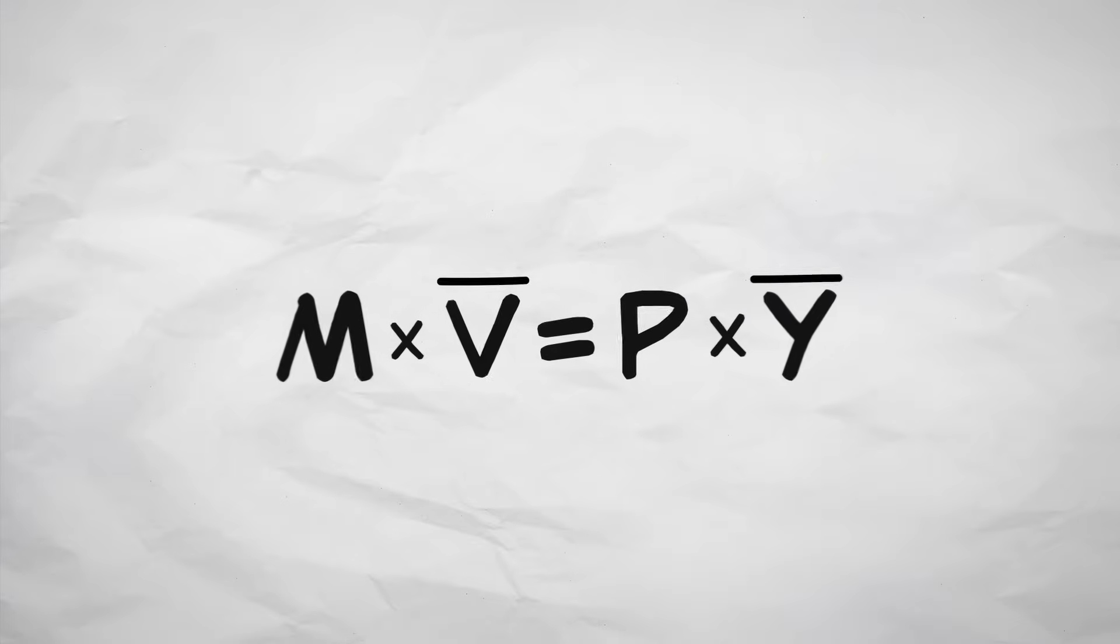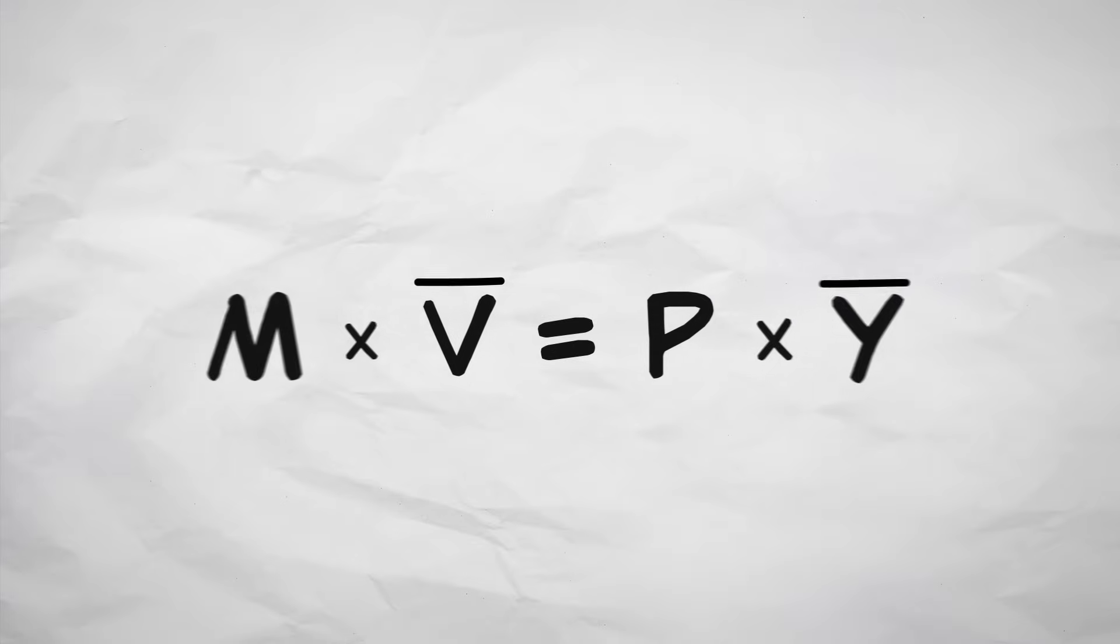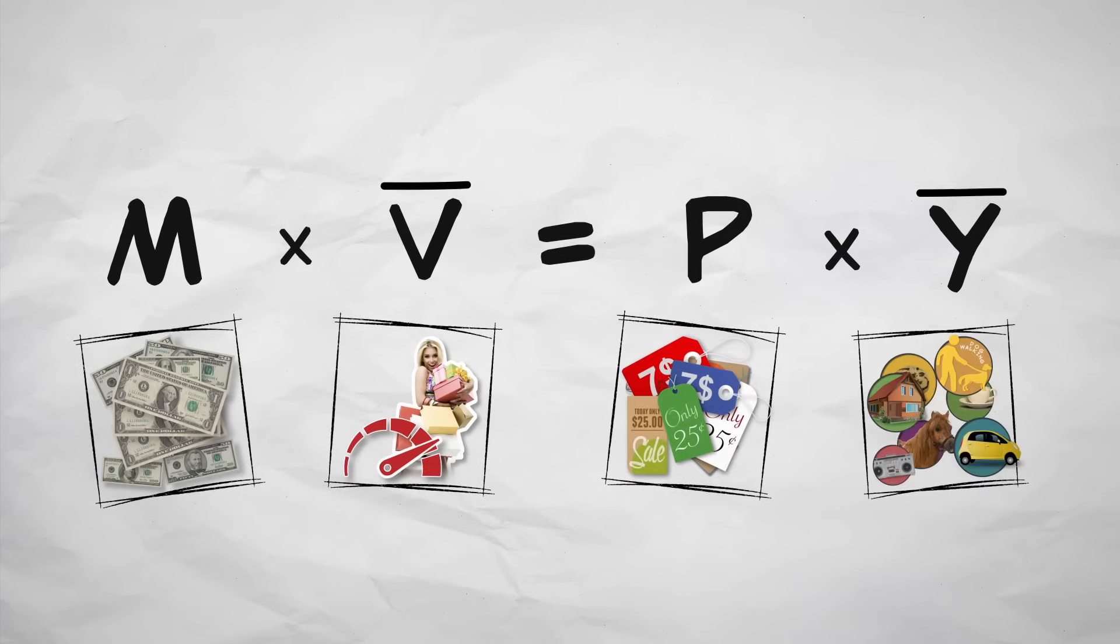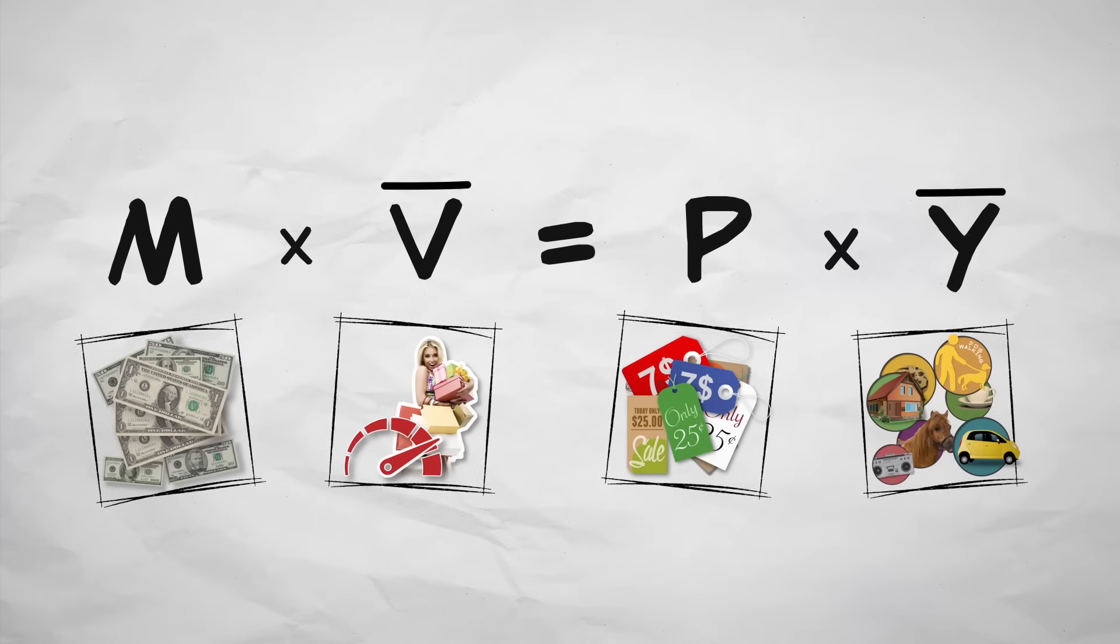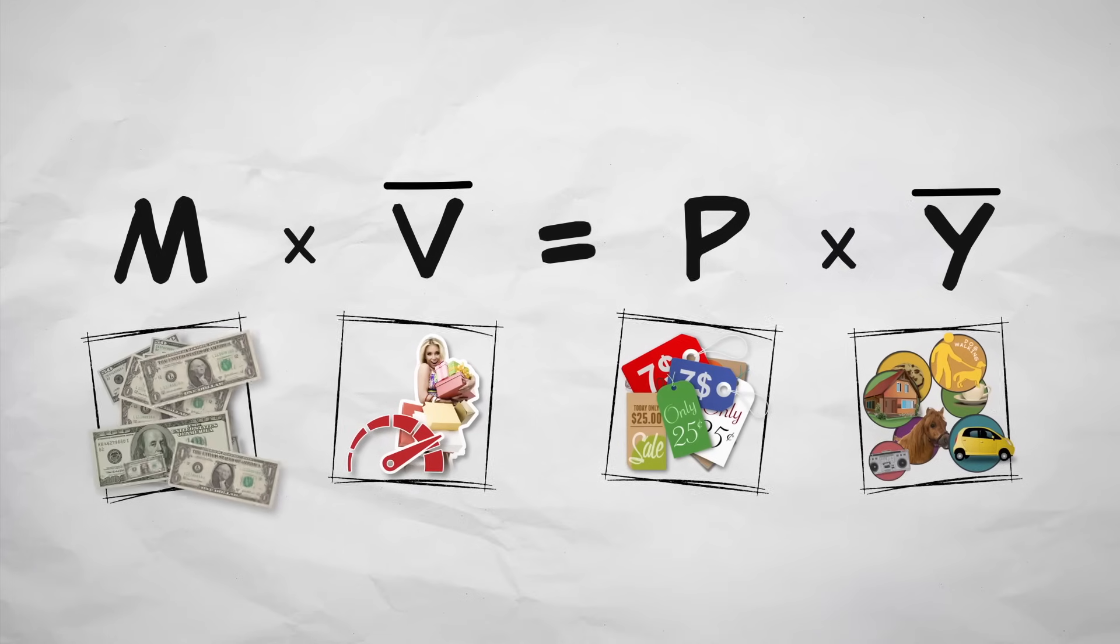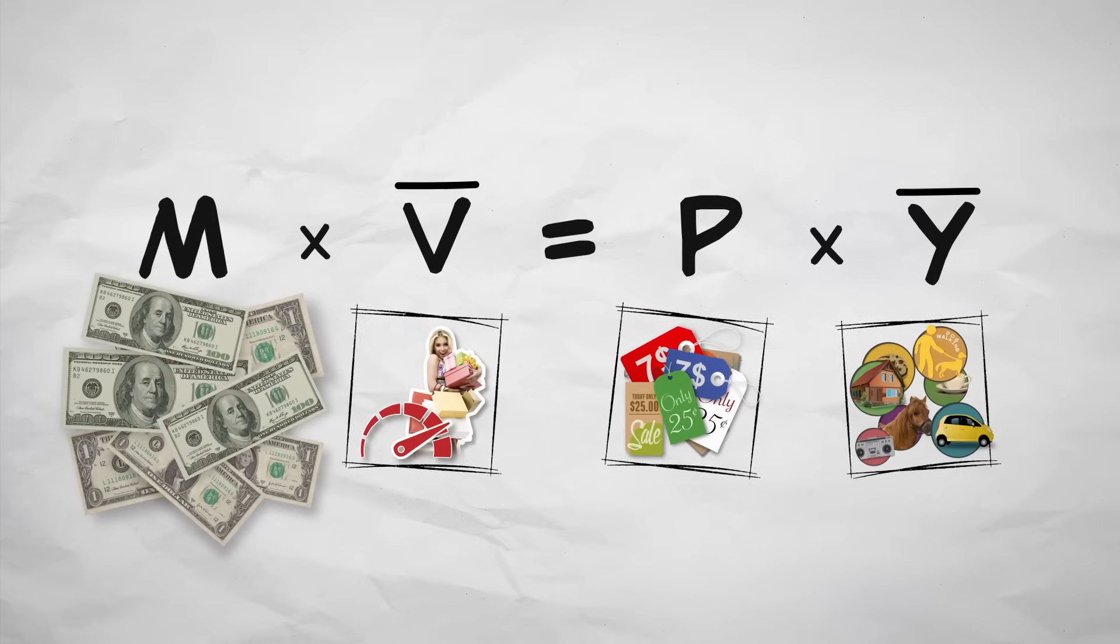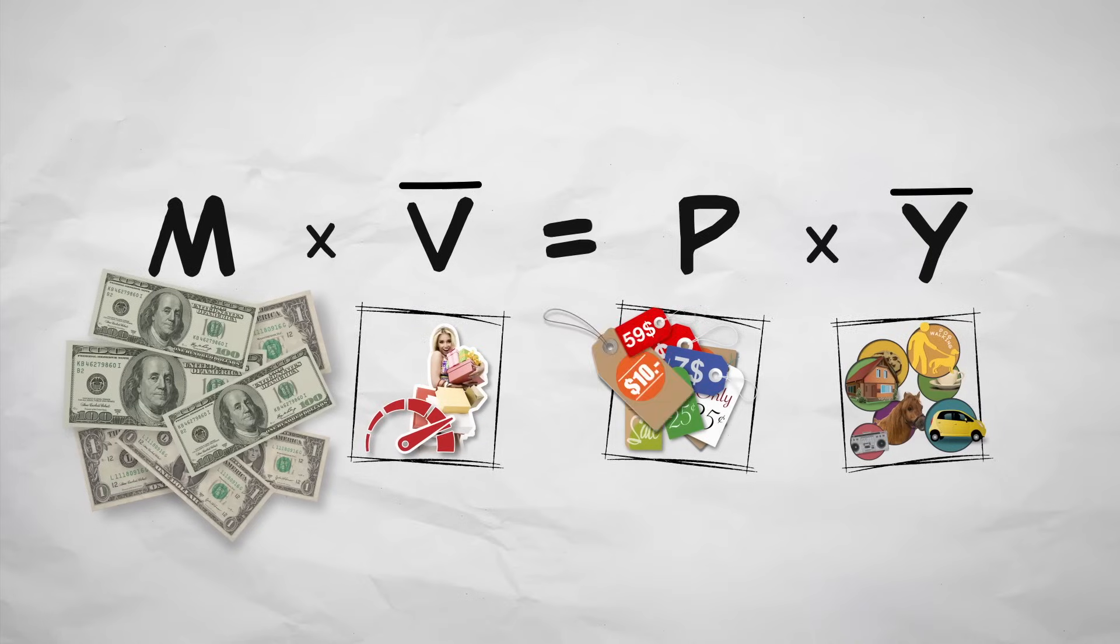We can summarize this by writing the quantity theory of money in a nutshell. Here's our equation written in the earlier form. Now, what this equation says is very simple and intuitive: When more money chases the same amount of goods and services, prices must rise.